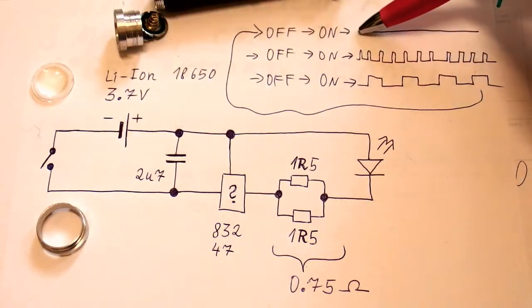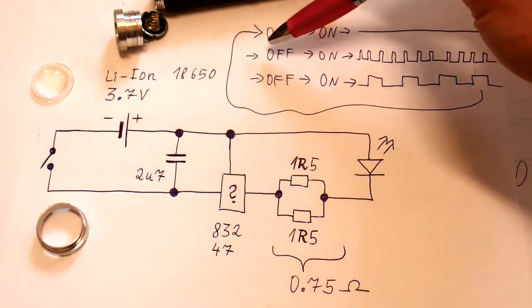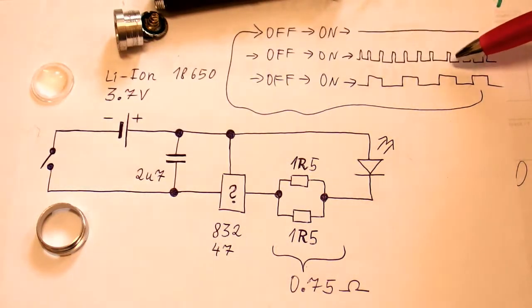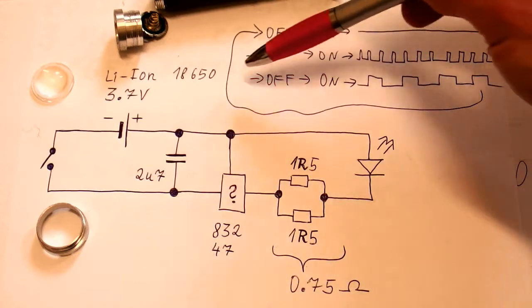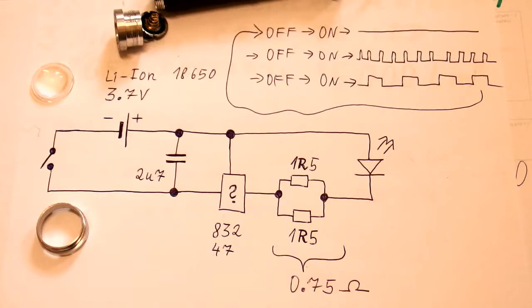And this chip just controls the modes. Once you turn it on, it's constantly on and this is the full power. The next time you turn it off and on, it's switching at a very high frequency. So it modulates the power. And the third time you turn it off and on, it blinks. Then it repeats.